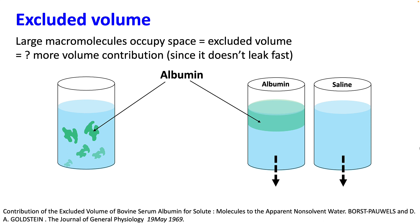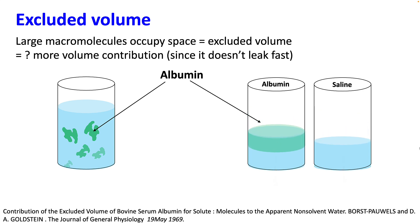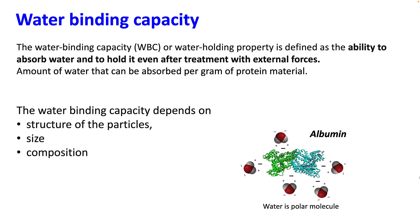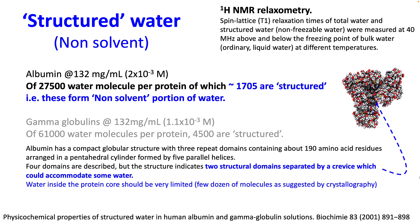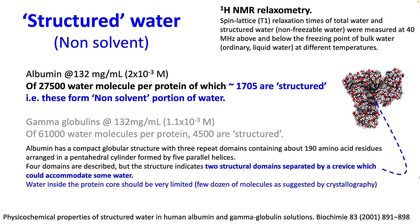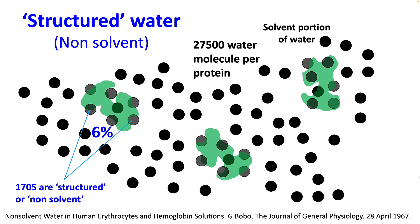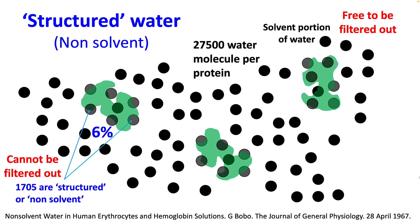Another interesting concept is excluded volume. Large macromolecules like albumin occupy space, and since they don't leak out, the space they have occupied remains inside and contributes to the intravascular volume even after some fluid has leaked out. So the volume of albumin remaining intravascular is higher than that with saline because albumin has occupied the space. Because of the negative charge on albumin it is able to hold on to many water molecules — since water is polar — and this is called water binding capacity. Water in very close proximity with albumin is called structured water or non-solvent water. In this experiment they found that out of 27,000 water molecules per albumin protein, around 1,700 are structured and constitute the non-solvent portion. This structured water is enclosed in close proximity with albumin and would be unable to leak out of your intravascular compartment, while the solvent portion of the water is free to be filtered out.